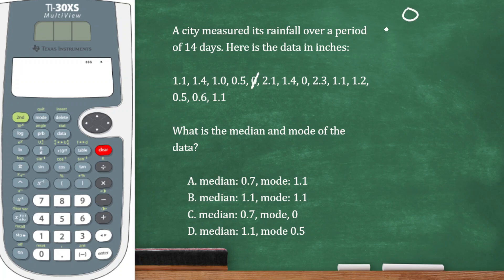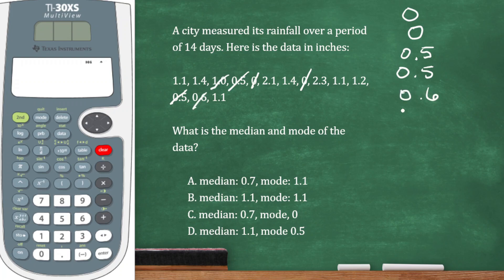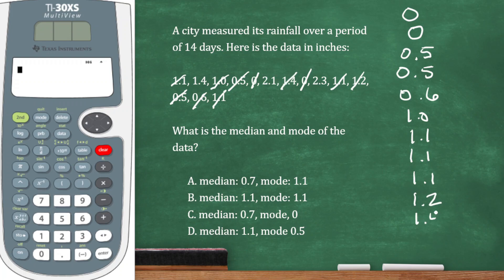Starting with the smallest values: 0, 0, 0.5, 0.5, 0.6, 1.0, 1.1, 1.1, 1.1, 1.2, 1.3, 1.4, 1.4, 2.1, 2.1.